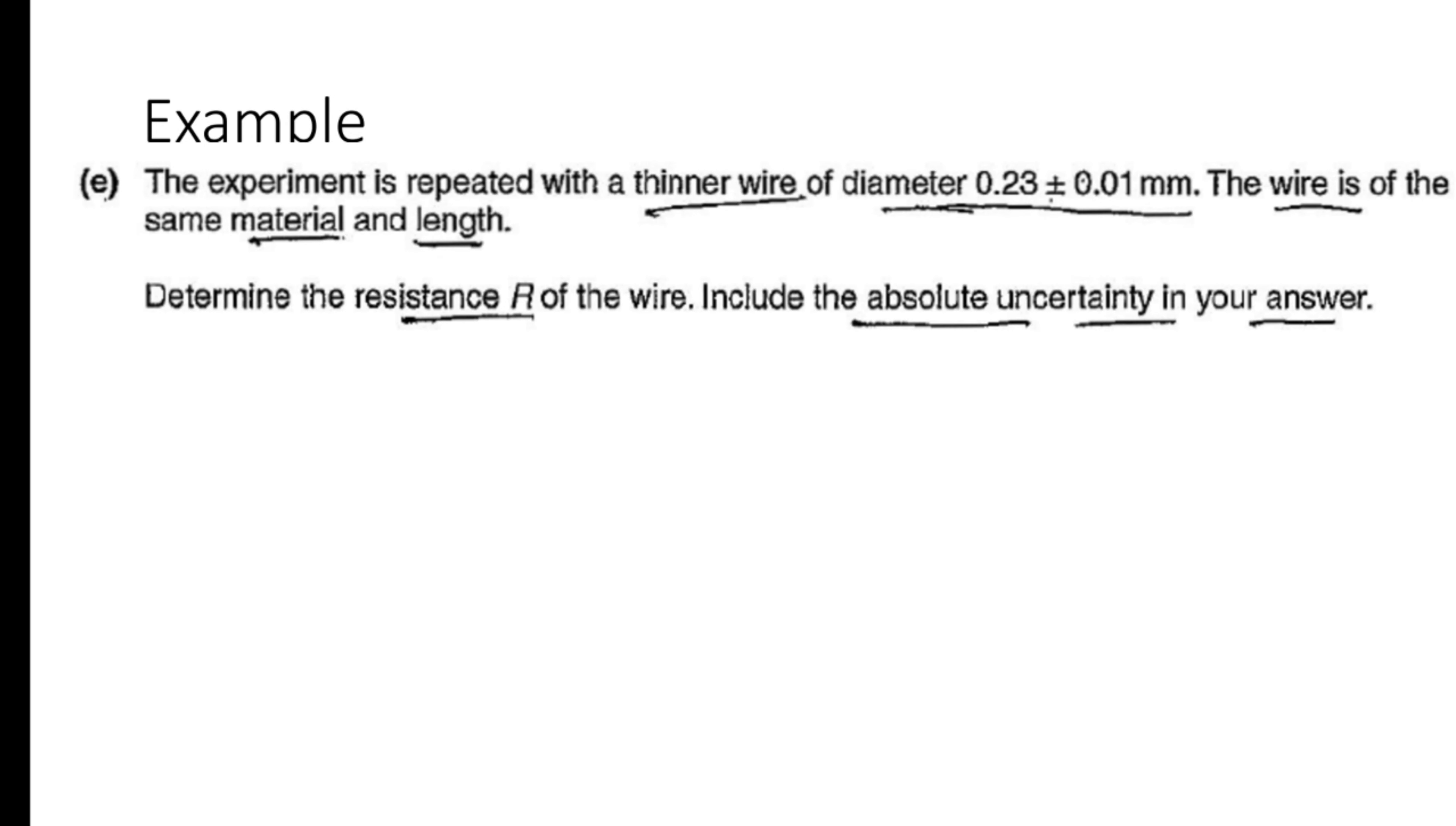Example is this is the question. The experiment is repeated with a thinner wire of diameter 0.23 plus minus 0.01 mm. The wire is of the same material and length. Determine the resistance R of the wire. Include the absolute uncertainty in your answer. So this is the question and look at the response.